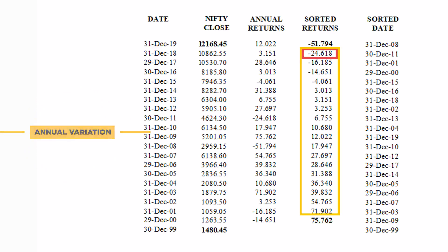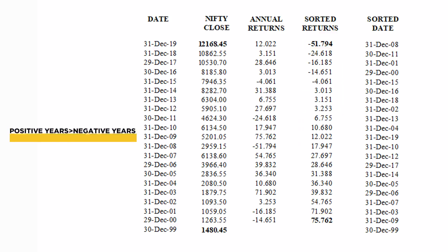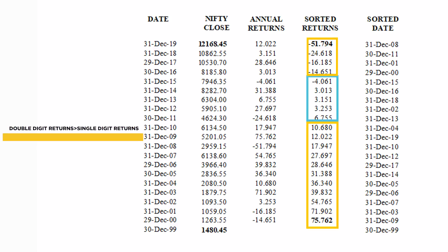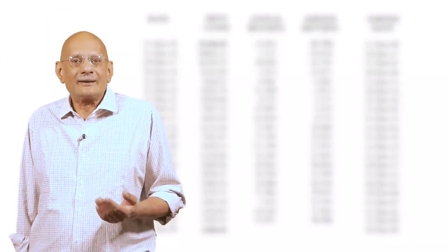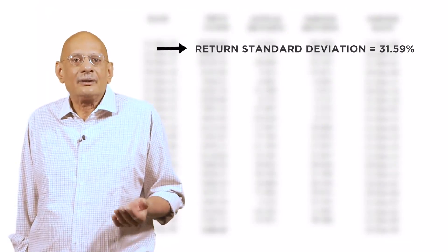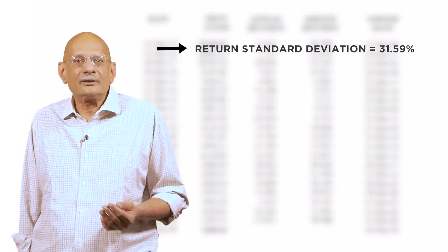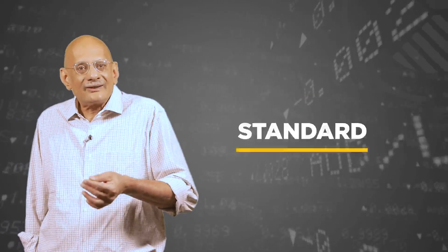Still, the Nifty returns annually show more positive years than negative years, more double-digit returns than single-digit ones. For those of you who know some statistics, this is not quite how a normal or Gaussian distribution behaves. But since the year-over-year returns do change, we look at their standard deviation — this calculates out to 31.59%. A ratio of one to the other, known as the coefficient of variation, is about 200%, and compares reasonably well with other markets.